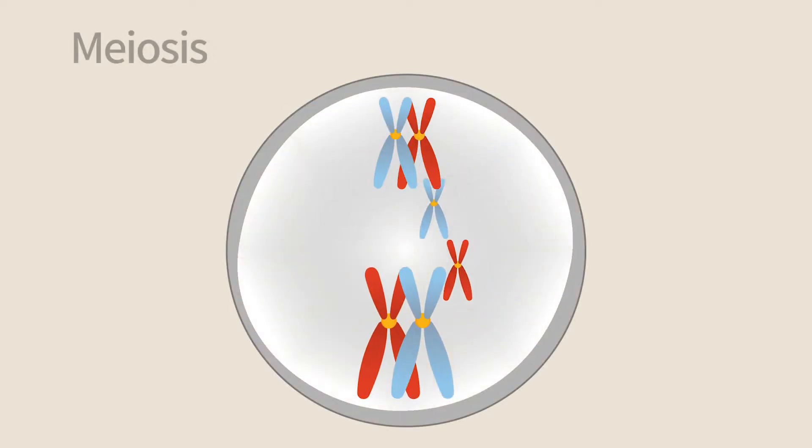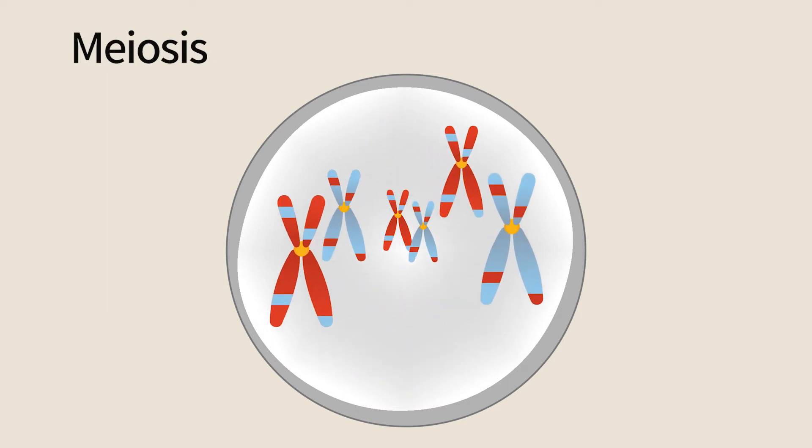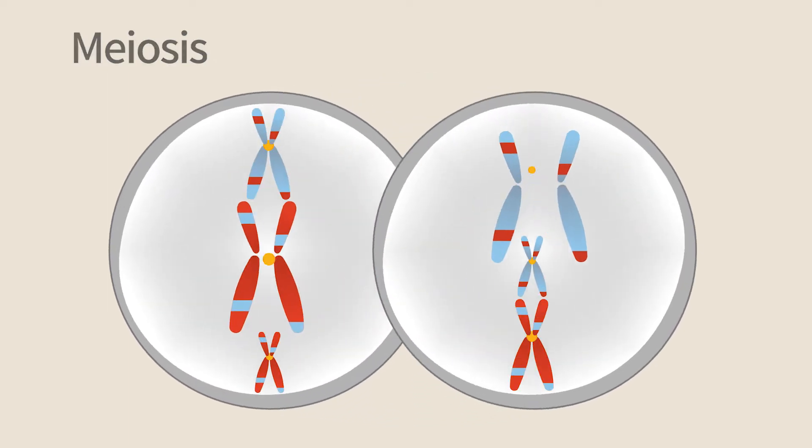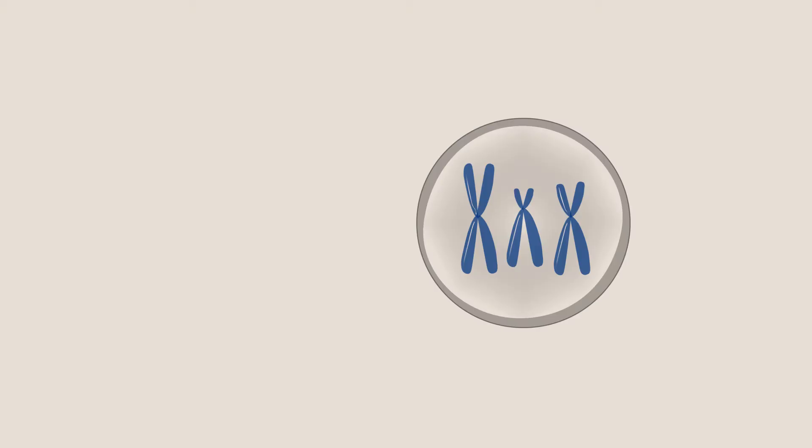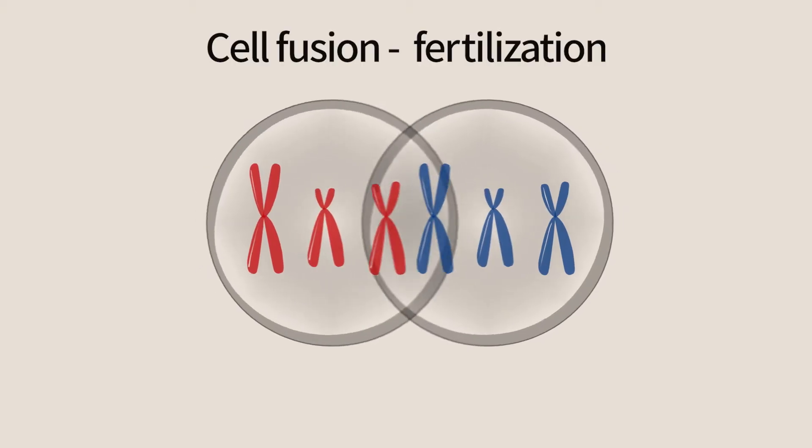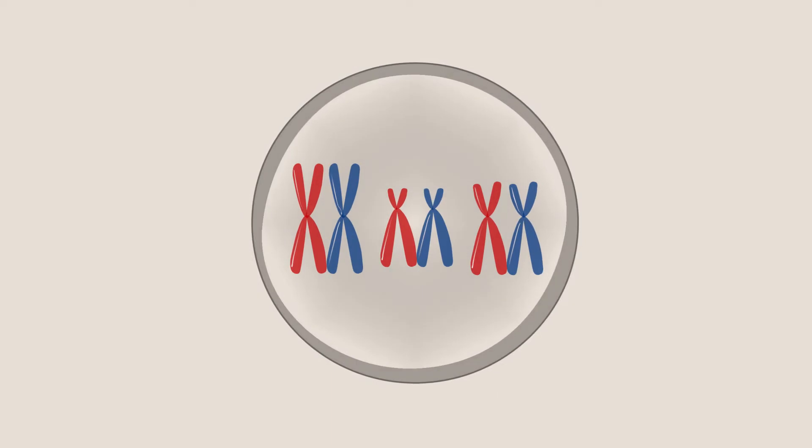In sexual reproduction, two haploid cells generated by meiosis from a diploid cell fuse and form a new diploid offspring cell. In order to fuse, the two haploid cells must differ from each other.